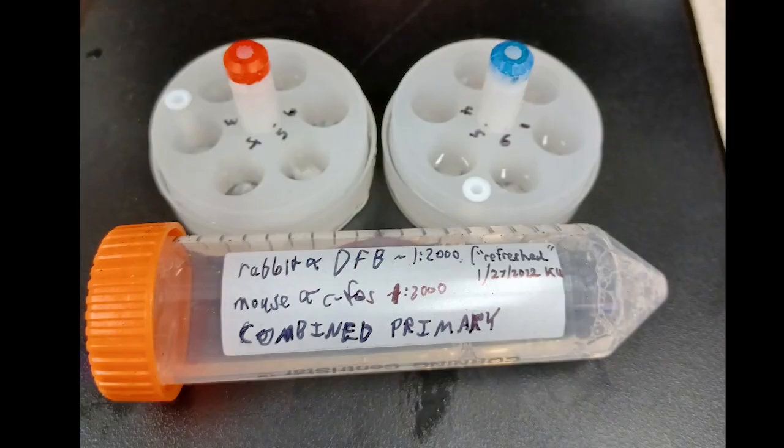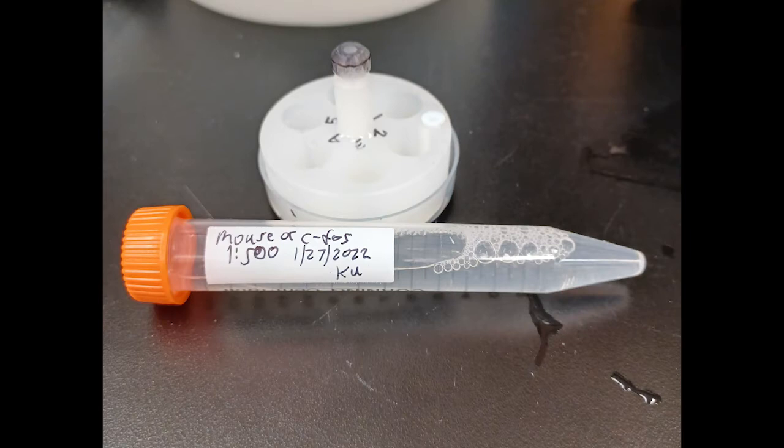On the counter, there are two tubes that the primary antibody solutions are normally stored in. Primary antibody solutions can be salvaged and reused, and they are also a somewhat expensive reagent. So, grab first this tube that says combined primary, and this other tube that says mouse anti-CFOS 1-500.